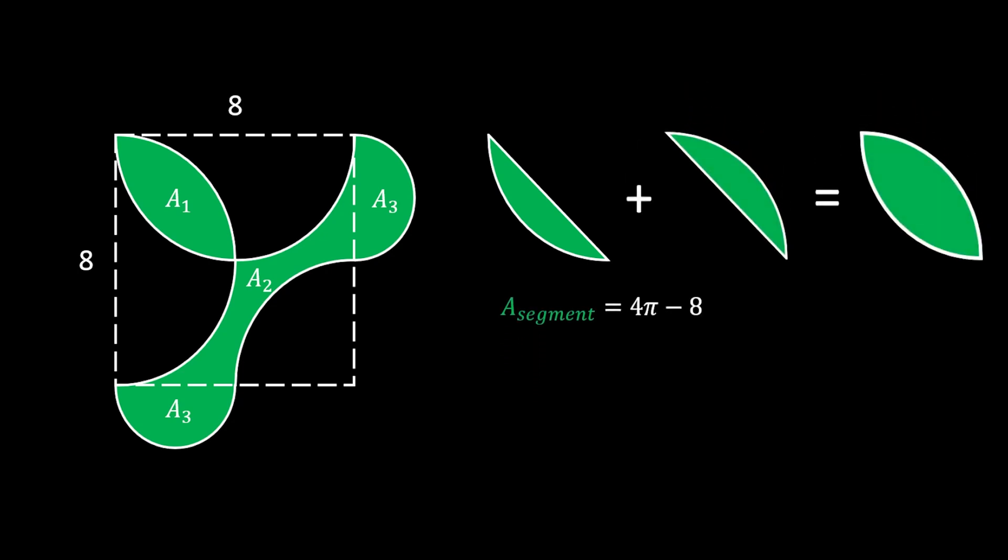But do not forget that we need two of these segments combined in order to get our area 1. So area 1 is equal to 2 times the area of the segment. That is 2 times (4π - 8), and that is 8π - 16. So that is our first area.